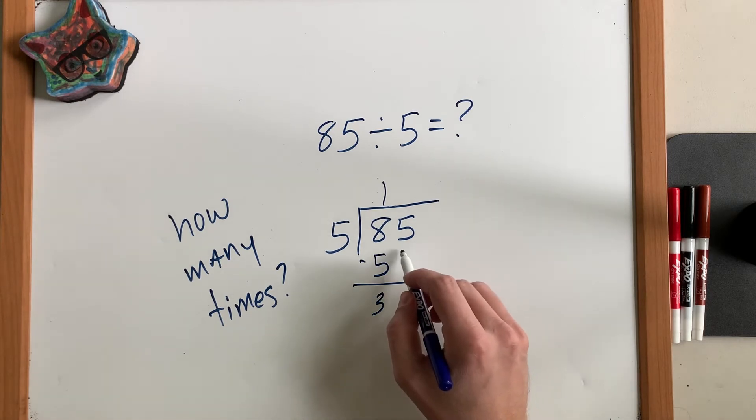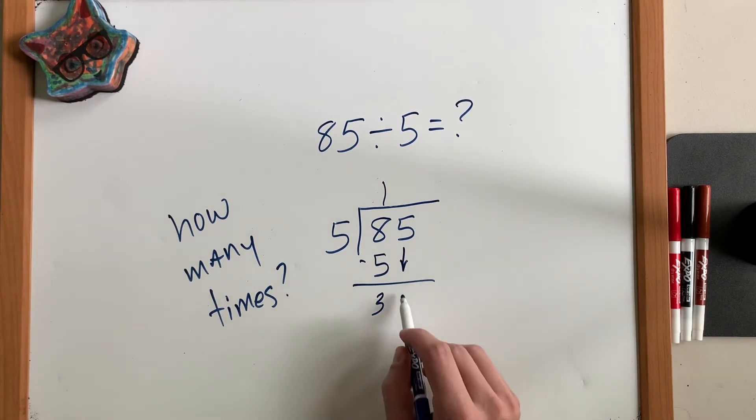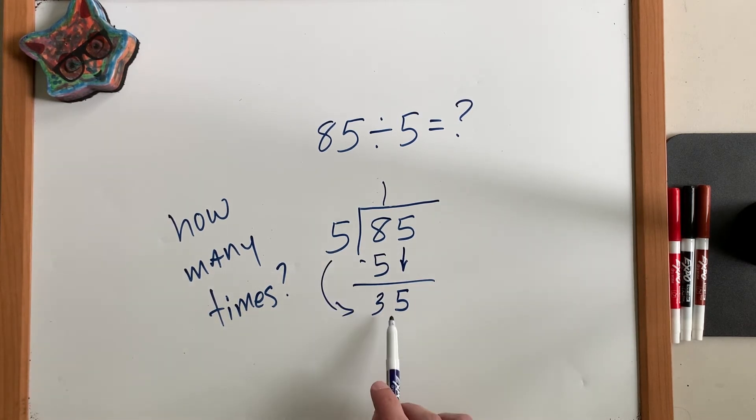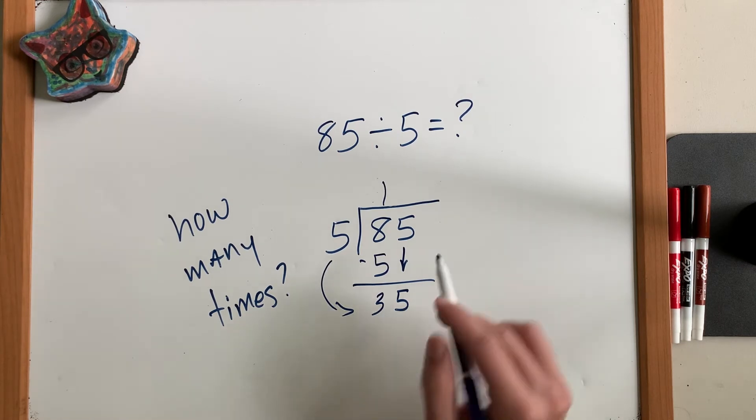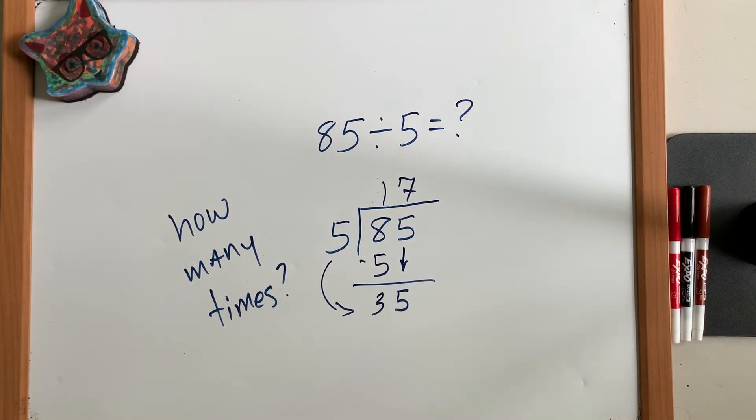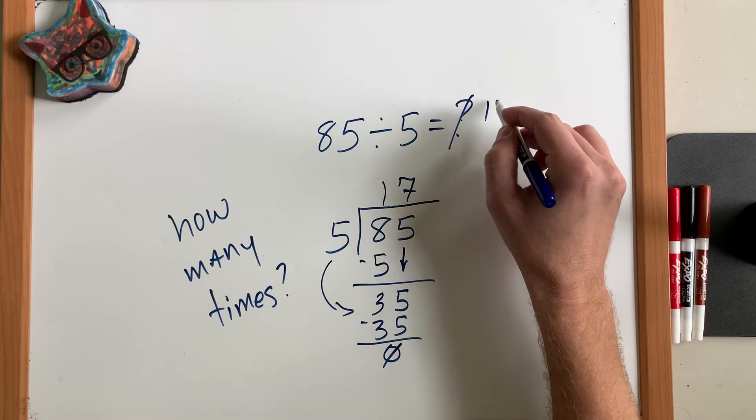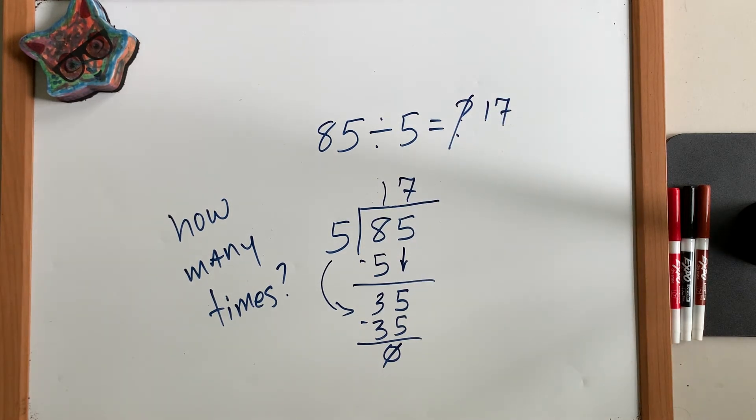Now what I'm going to do is carry down the next number like so. And I'm going to ask that same question. How many times does 5 fit into 35? You can answer this by thinking about your multiplication tables. And we know that 5 times 7 is 35. So it fits in 7 times. 5 times 7 is 35. When we subtract, we have nothing left over. That means that we're done. And the answer is 17. 85 divided by 5 is 17.